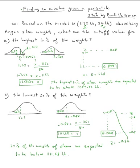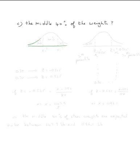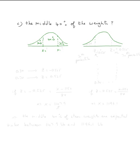For the next problem, we need to find the middle forty percent of the weights, so we need to find two x values. The middle forty percent leaves sixty percent remaining, which is thirty percent on each tail. So this left cutoff is at the 30th percentile, and the right cutoff is at the 70th percentile. Let's use the normal table to find z first.